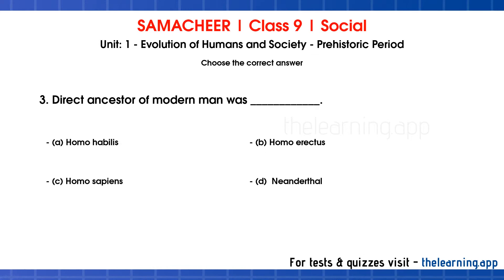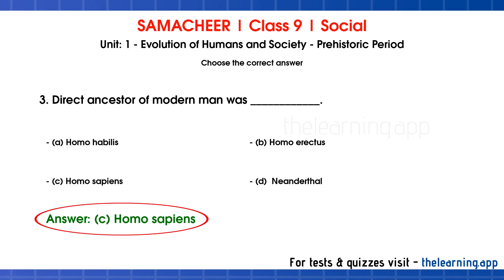The correct answer is Homo sapiens. Homo sapiens is the modern man. We have a direct ancestor of the modern man. Who is the first appeared wise man? It is Homo sapiens. The first species is Homo sapiens, and in Africa we have evidence going back 3 lakh years.